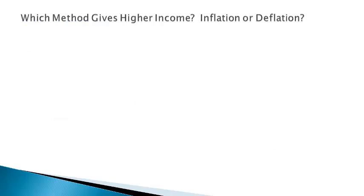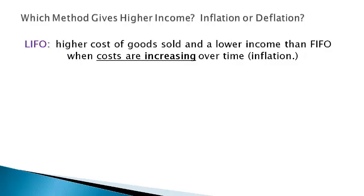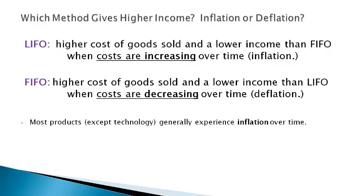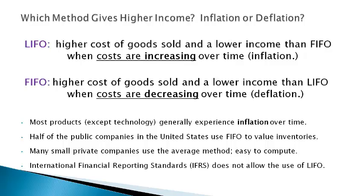Which method gives higher income depends on inflation or deflation. LIFO gives a higher cost of goods sold and a lower income than FIFO when costs are increasing over time. FIFO gives a higher cost of goods sold and a lower income than LIFO when costs are decreasing over time. Which method gives the highest income depends on whether cost is increasing or decreasing. Most products, with the exception of technology, generally experience inflation over time. Approximately half of public companies in the United States use FIFO and the other half use LIFO. Many small private companies use the periodic weighted average method because it is easy to compute. International financial reporting standards does not allow the use of LIFO.